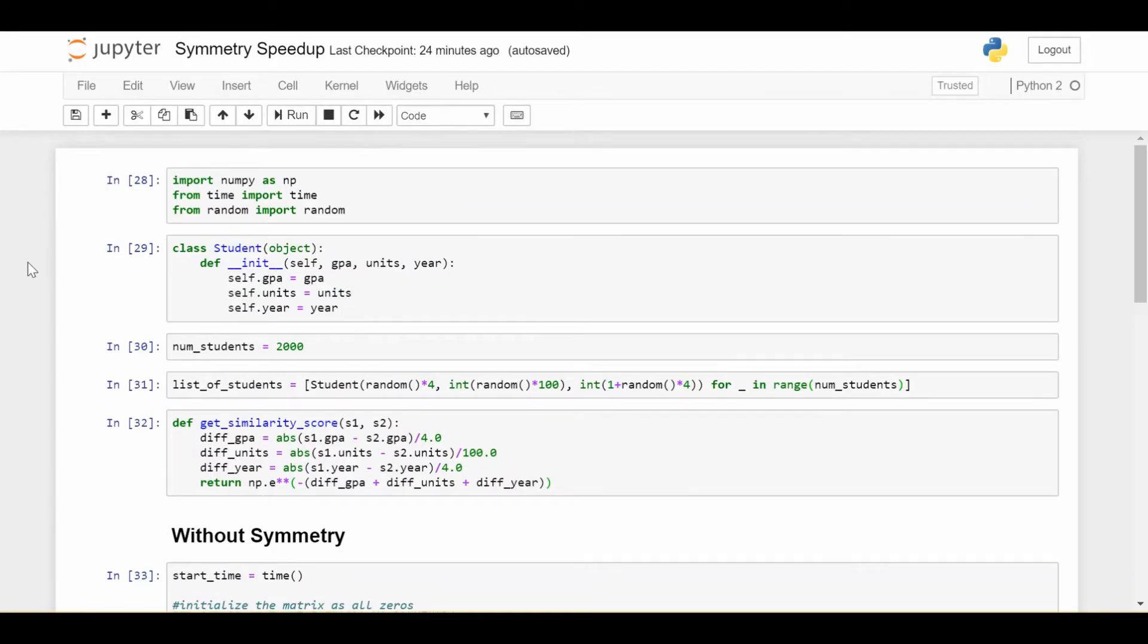So now let's take a code look at how we can use a symmetry speedup to make some code faster in a real-world setting. So in this example, we'll be dealing with a student object. So this is a very simple class in Python. Don't worry if you're not familiar with object-oriented programming or classes. It's very easy to understand, especially this little class here. So we have a student class. And the only stuff about a student is their GPA, number of units they have so far, and their year. So that's all you really need to know about that.